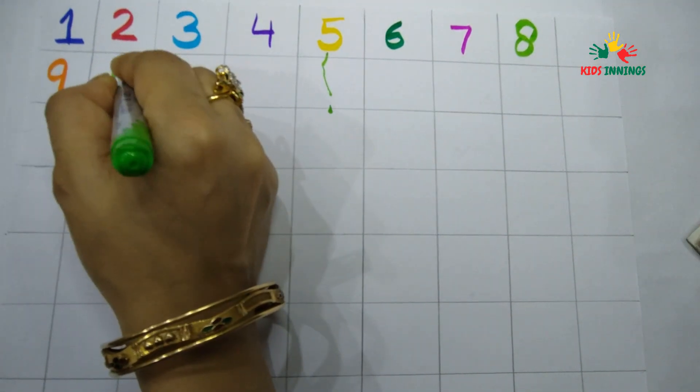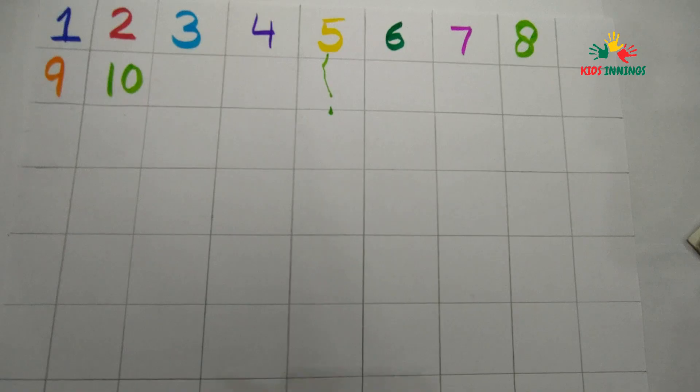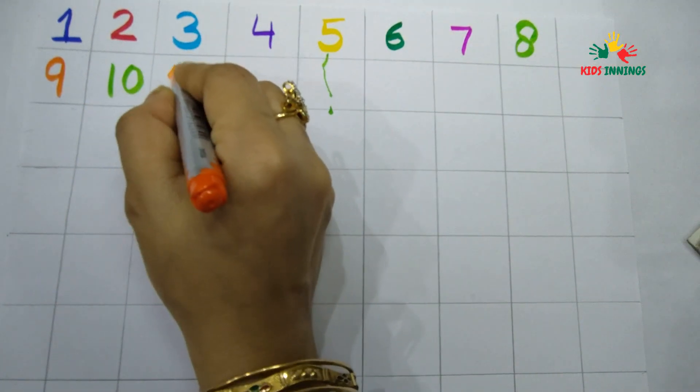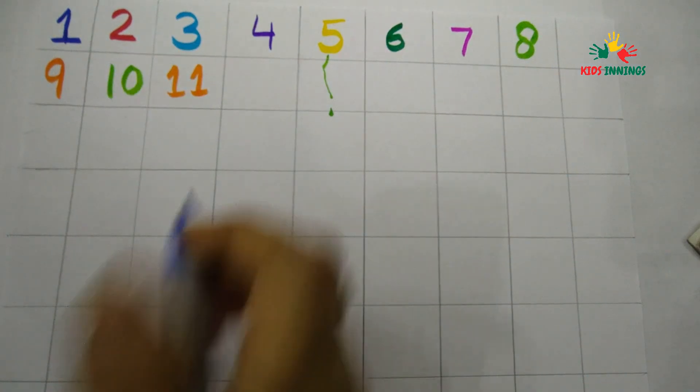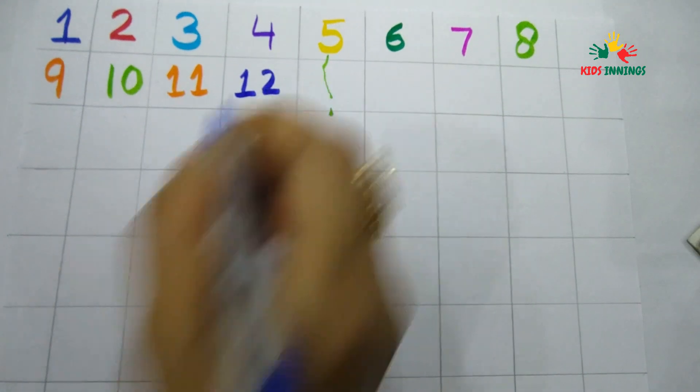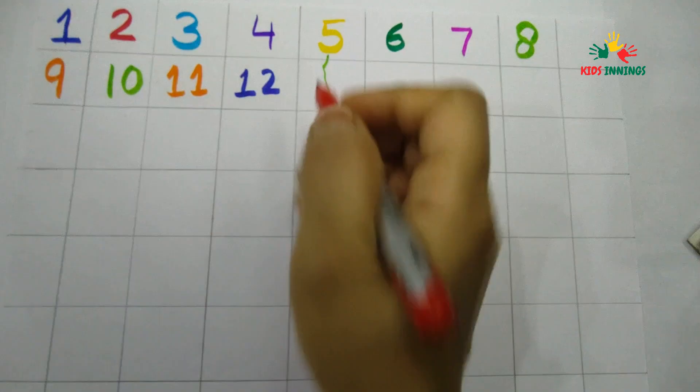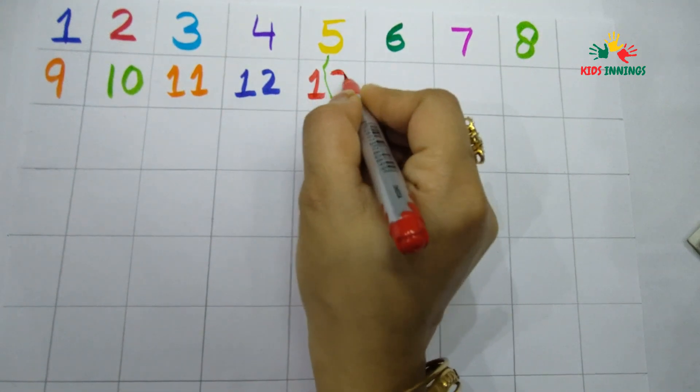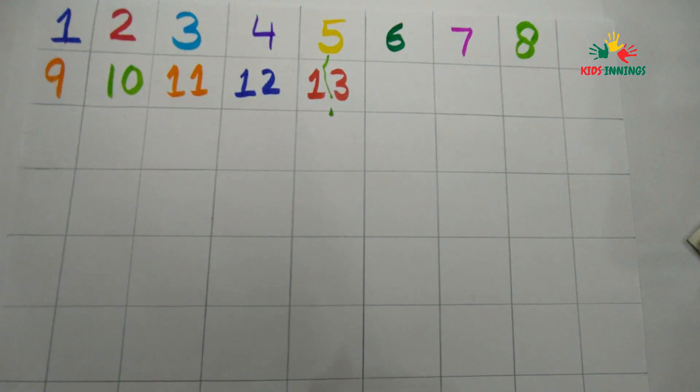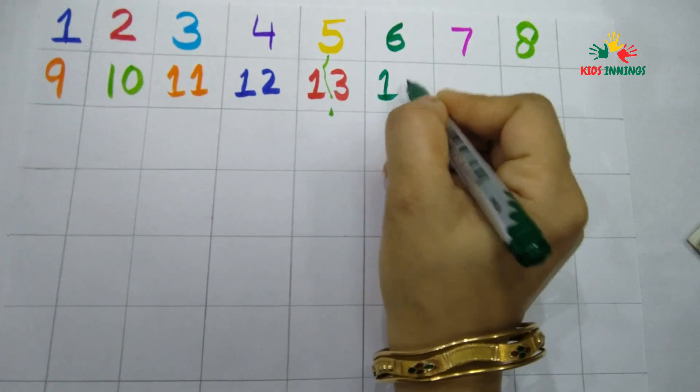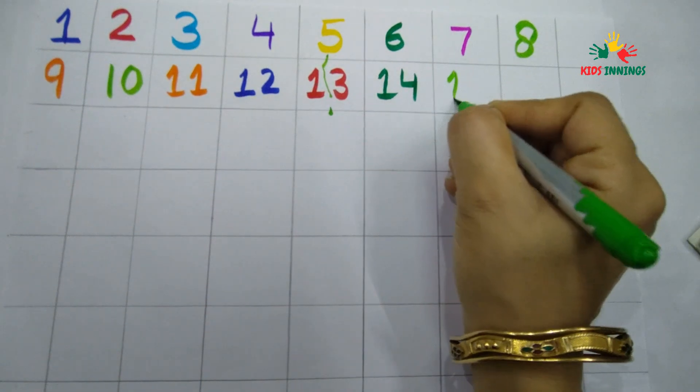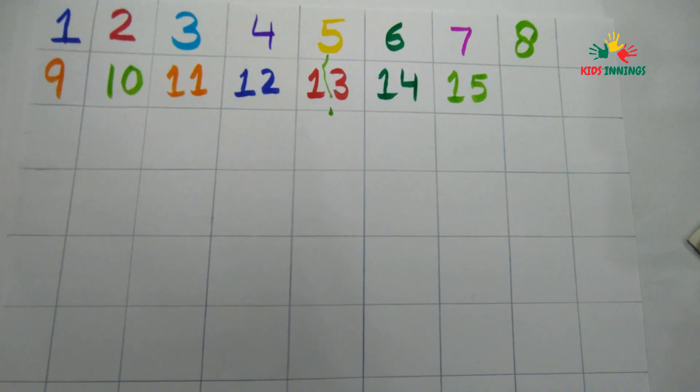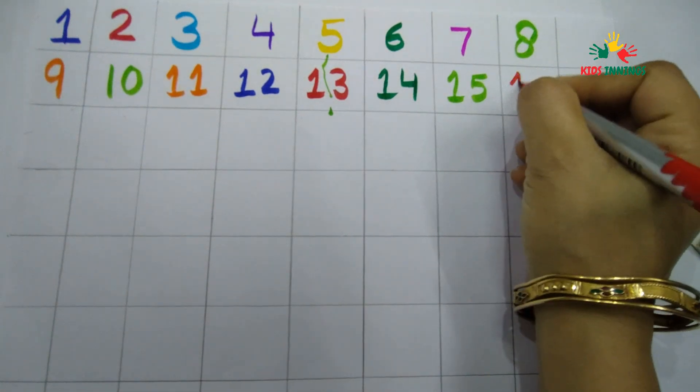This is number eleven (one one), twelve (one two), thirteen (one three), fourteen (one four), fifteen (one five), sixteen (one six).